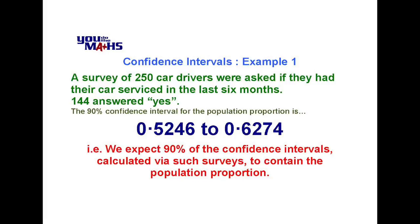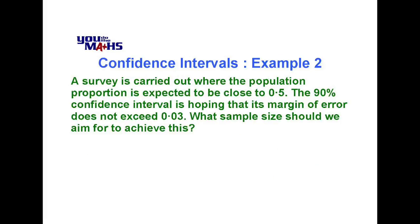Let's look at our second example now but this time we actually know the width of the interval. What we're trying to determine is the size of the sample required to achieve this level of accuracy. While we don't know the population proportion in this example we are told it's close to 0.5. We're looking at a 90% confidence interval hoping that the margin of error does not exceed 0.03. Our task is to find the appropriate sample size.